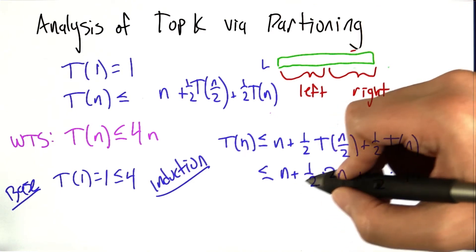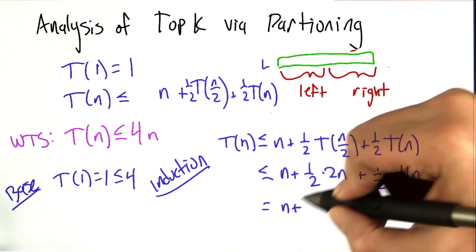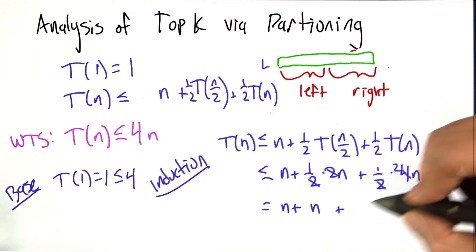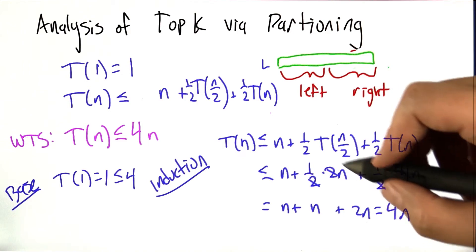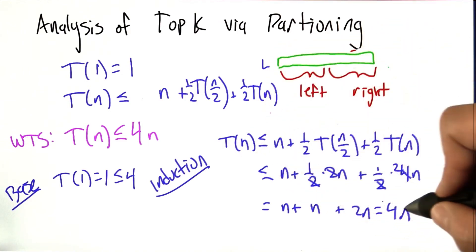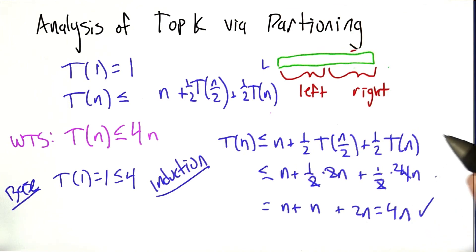What we have is, this is equal to n plus n plus 2n, which is indeed 4n. So we've now shown that for each value of n, T of n is always upper bounded by 4n. And that's what we wanted to show.